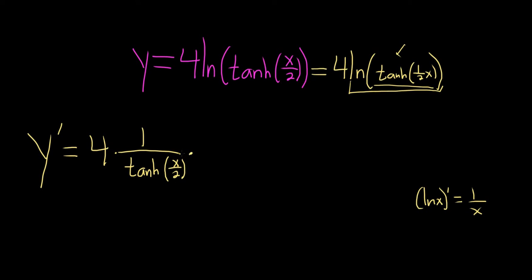times the derivative of tanh. So the derivative of tanh is the hyperbolic secant squared. So this is the hyperbolic secant squared of x over 2, times the derivative of the inside again, which we talked about is just 1 half. So it's like two chain rules, I believe.